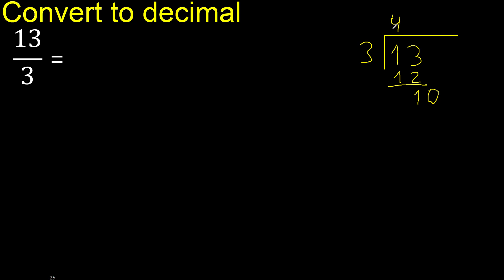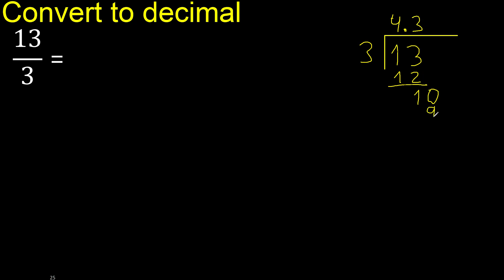Always complete with 0 — place the decimal point here. 0 point, ok: bring down 10. 3 multiplied by 3 is 9, which is not greater than 10. 10 minus 9 is 1.